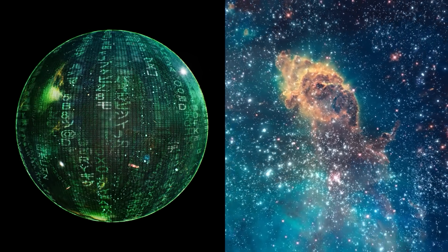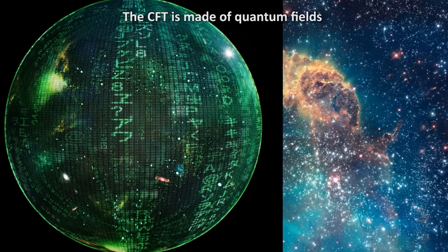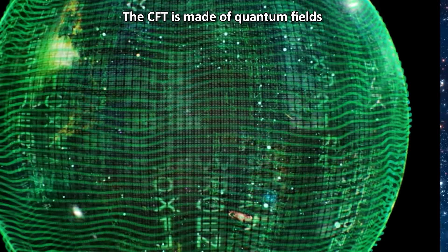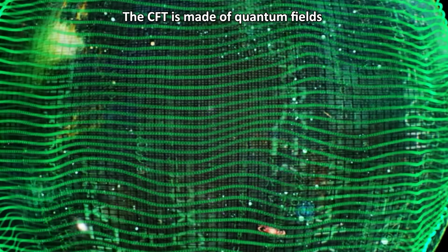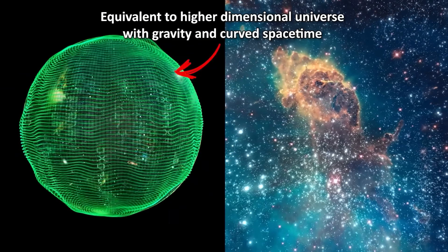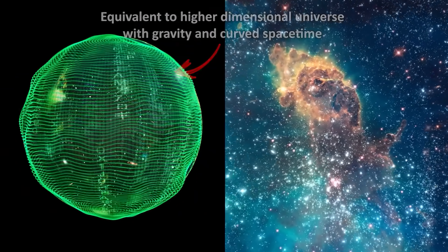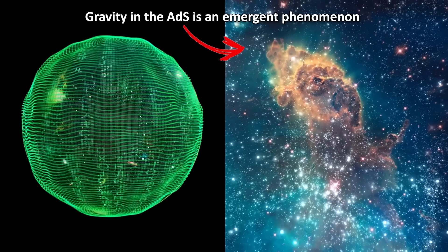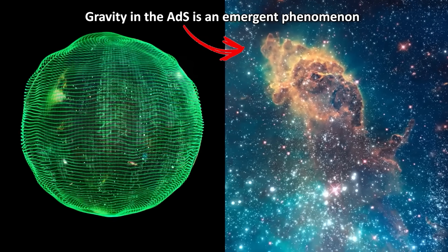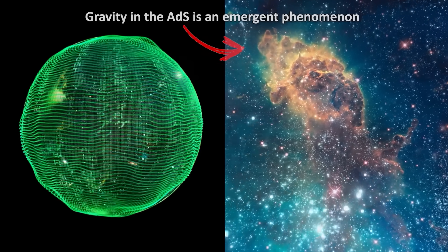On the boundary side, the CFT, we have a quantum system of fields and particles, evolving with no gravitational force. It lives in a flat space-time and obeys ordinary quantum mechanics. Yet this system is equivalent to a picture of one higher dimensional world where gravity and curved space-time do exist. In other words, gravity in the ADS bulk is an emergent phenomenon, a holographic image of the quantum field dynamics on the boundary.